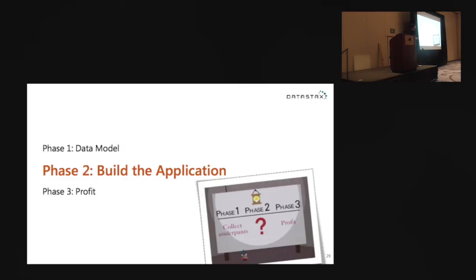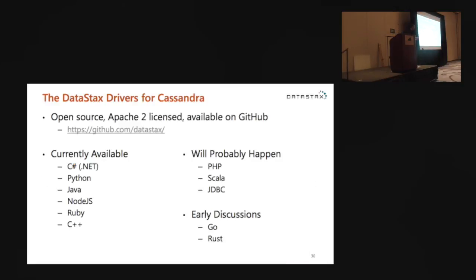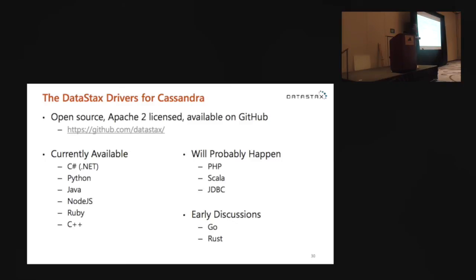Now let's talk a little bit about building the actual application itself. You've done conceptual data modeling and physical data modeling. John showed you Python earlier today — awesome if you're a Python user. These are where we actually have drivers available. They're all open source — official DataStax drivers available on our GitHub, all under the Apache 2 license. Pretty much all the languages you'd expect are covered. There are some that will probably happen soon, and early discussions for Go and Rust. There is probably a driver up here for your language of choice.